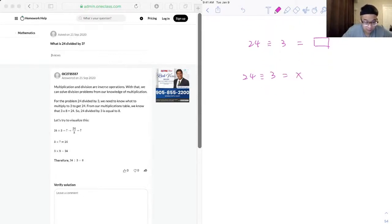where we don't know what x is. So, we just need to think 3 times x is equal to 24.